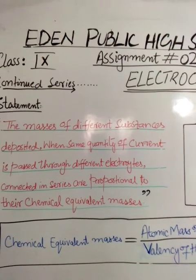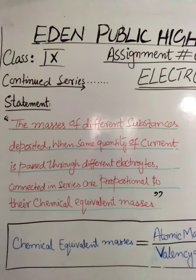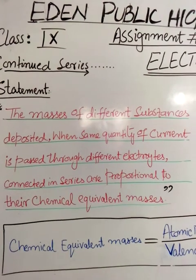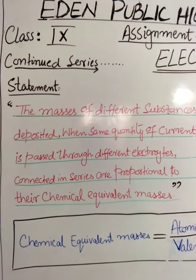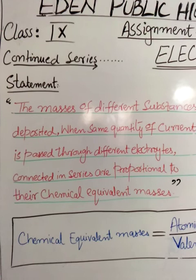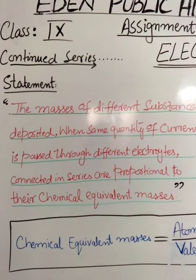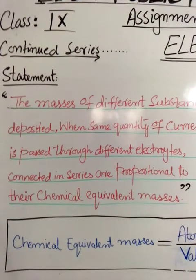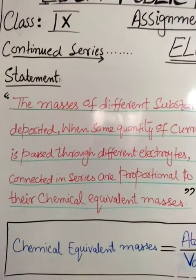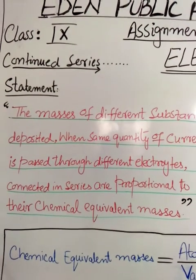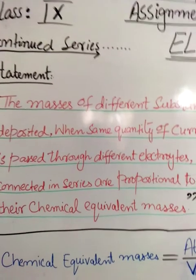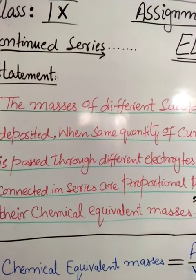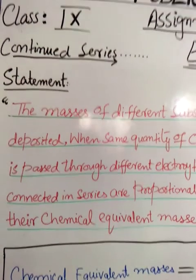In my first video I explained the phenomenon of electrolysis through an electrolyte, showing you the diagram of an electrolytic apparatus in which an electrolyte is filled. When electrolysis occurs, positive and negative charges migrate towards their respective poles - the respective charged particles move towards their respective terminals.